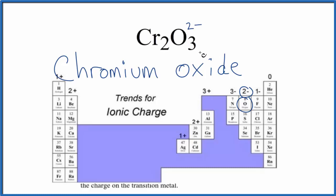So the whole thing needs to add up to zero. Three times 2-, that's 6-. So we need 6+ over here to balance the charge.